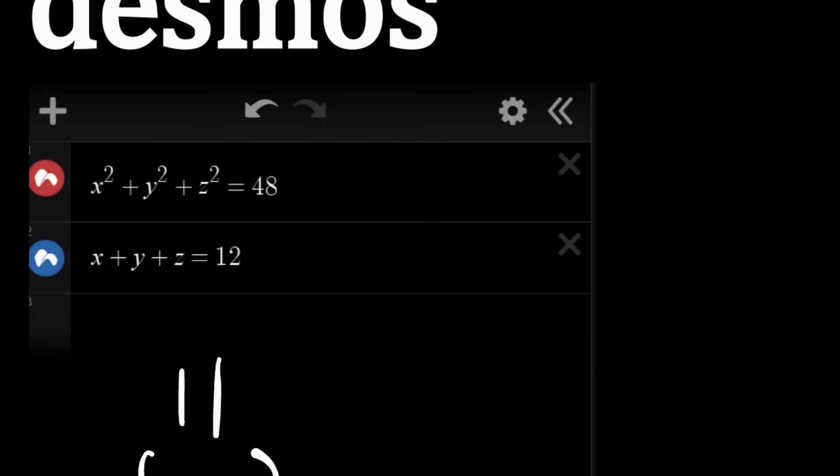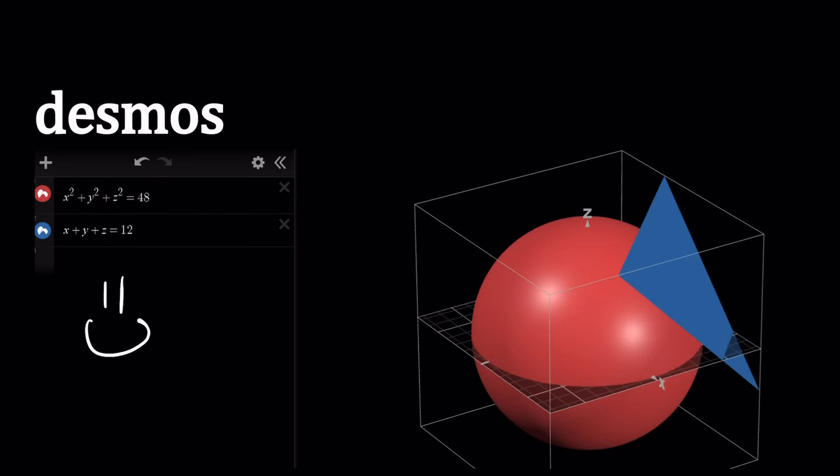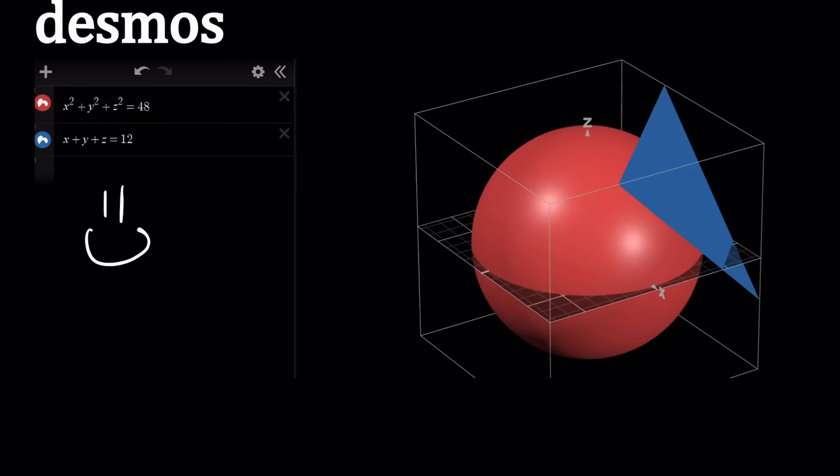Let me tell you. This is a sphere. Can you see that? And that is a plane. And this plane is tangent to the sphere at one point, which means there's only one set of solutions. And this brings us to the end of the video.